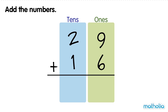Add the numbers. 29 plus 16. Let's start by adding the 1s. 9 ones and 6 ones equals 15 ones. We can regroup the 15 ones into 1 ten and 5 ones. We write the 5 ones in the ones column and the 1 ten in the tens column.